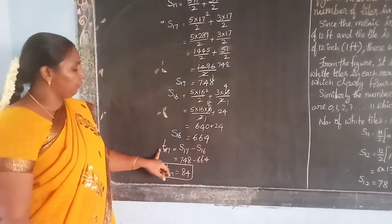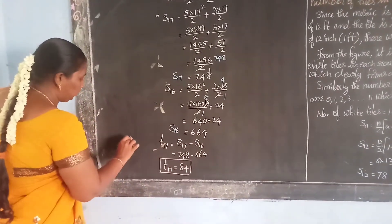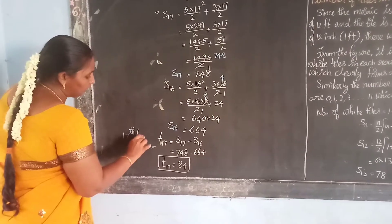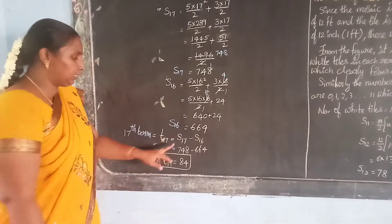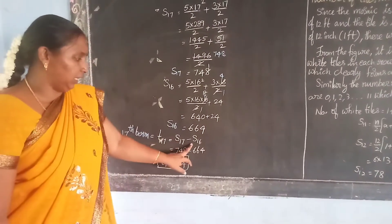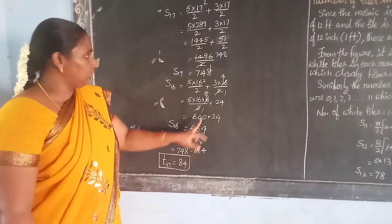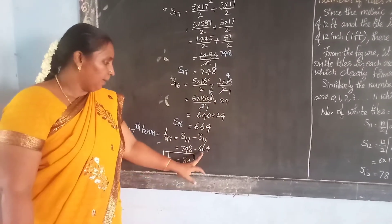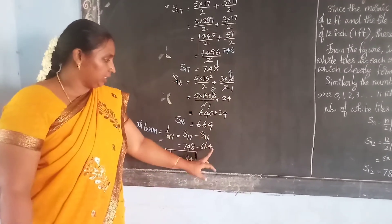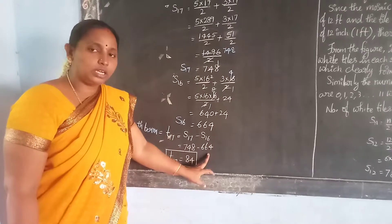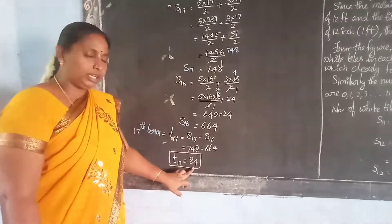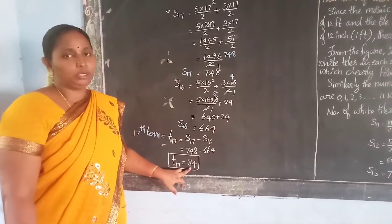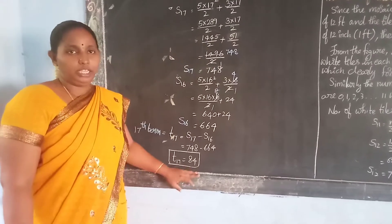They asked us to find the 17th term. T17 = S17 − S16. S17 is 748 and S16 is 664. If we subtract, we will get 84. So the 17th term equals 84.